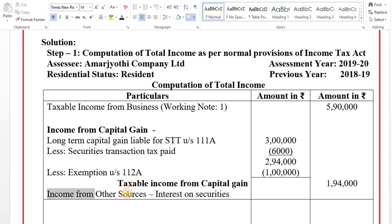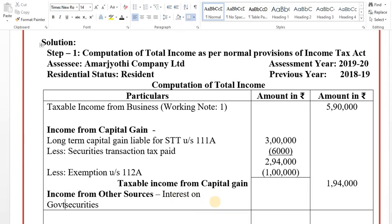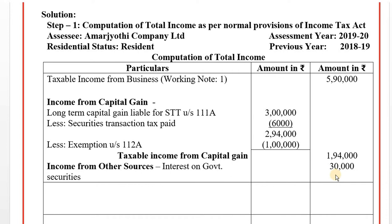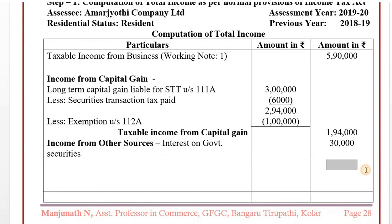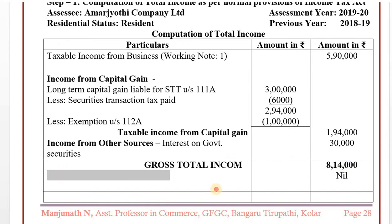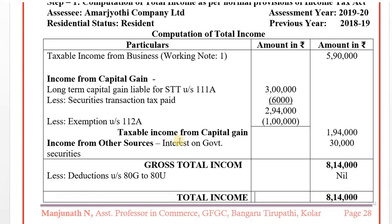Income from Other Sources: Interest on government securities Rs. 30,000. Total income: Rs. 8,14,000 — comprising business income Rs. 5,90,000, capital gains Rs. 1,94,000, and other sources Rs. 30,000.